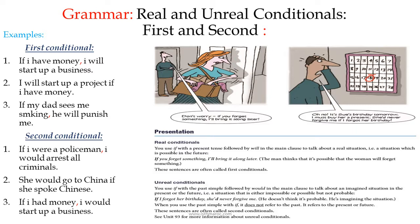...plus comma — the comma is very important when you start with 'if' — plus will + verb in the infinitive. The form of the first conditional is: if + simple present + comma + will + verb in the infinitive. You can also reverse the sentence: 'I will start up a business if I have money.' In that case, there is no comma.